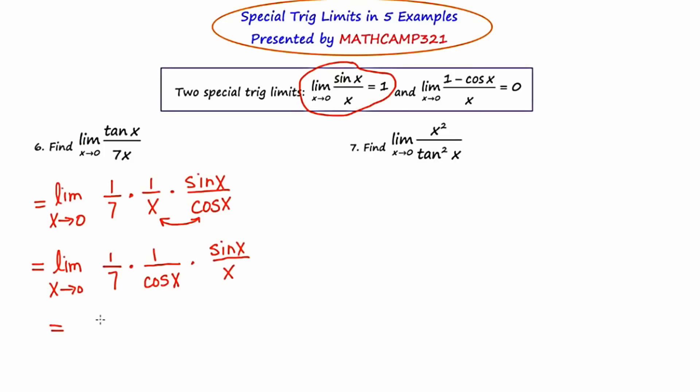Believe it or not, we're almost finished here. I'm now at the point where I'm going to take the limit, which is to substitute zero in for every occurrence of x. Well, certainly nothing happens with the one seventh, so I'll just rewrite that. Now, if I plug zero into this x right here, I have the cosine of zero, which is one. So the whole second fraction becomes one. And then when I plug zero into this, it becomes our special trig limit. And the limit as x approaches zero of sine x over x is one. So in the end, we're just left with an answer of one seventh.